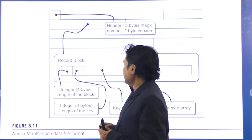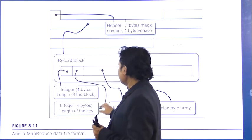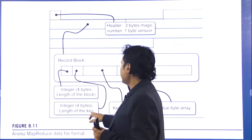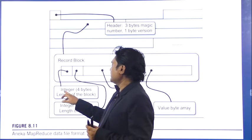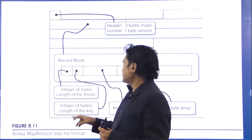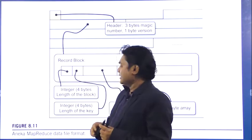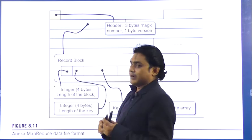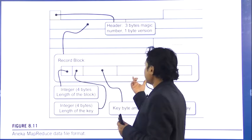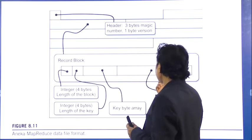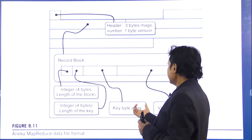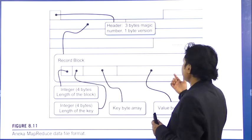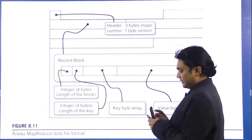The length of the block and the length of the key are given in integer format, which holds four bytes. The actual data is represented here in the forms of key-value pairs. The key-value pairs are represented in the forms of a byte array, and the value is also represented in the forms of a byte array.